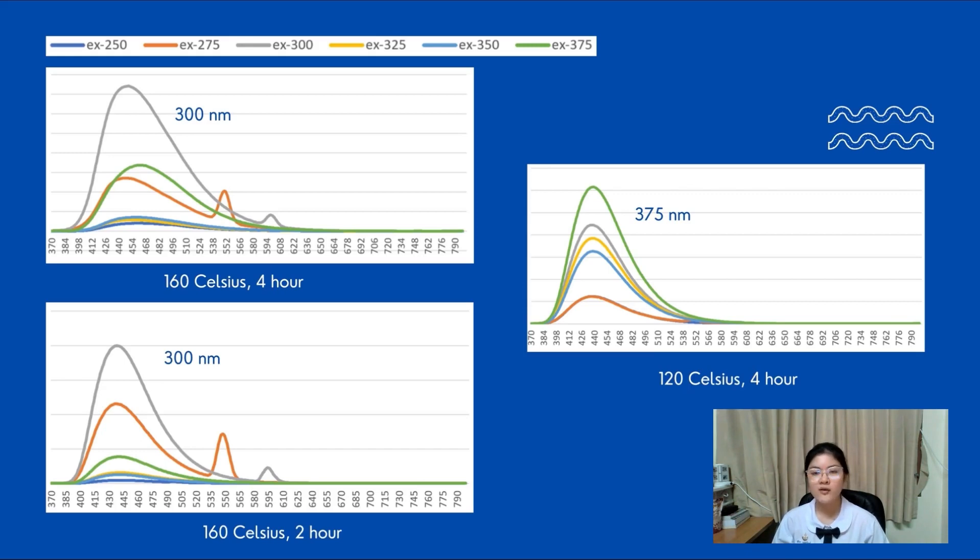Meanwhile, for 120 degrees Celsius conditions, the most intensity wavelength is carried out by 225 nanometers.